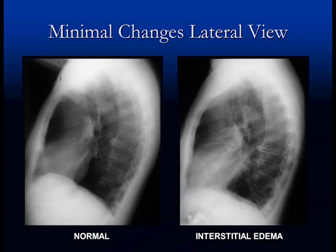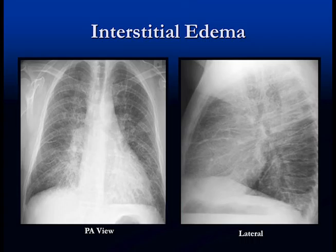Again, normal on the left and abnormal on the right — the same patient with interstitial pulmonary edema. There are way more lines, a sort of ground glass haziness, the hila are bigger, and the vessels are ill-defined. On the lateral view — normal on the left, abnormal on the right — there's thickening of the fissures, and the hila look bigger and smudged, ill-defined.